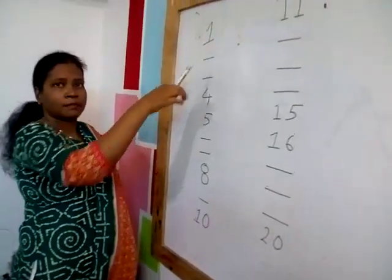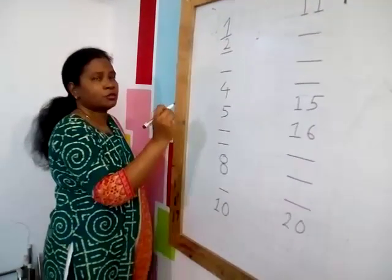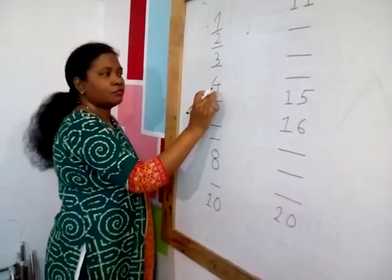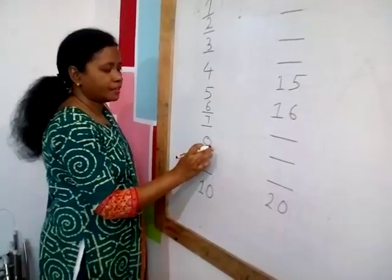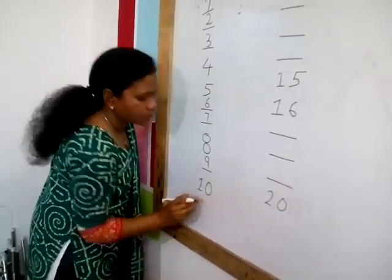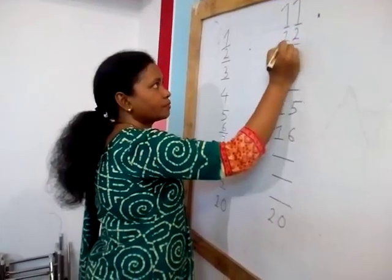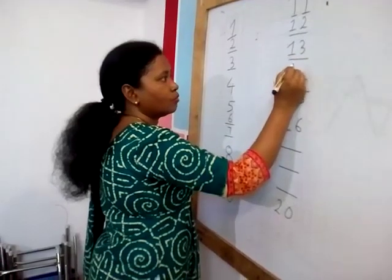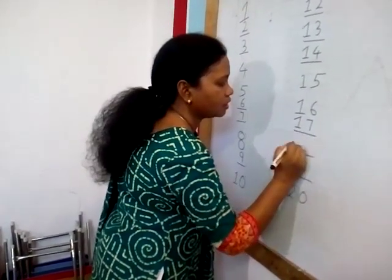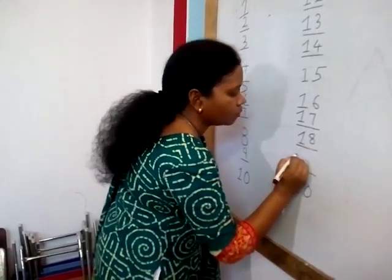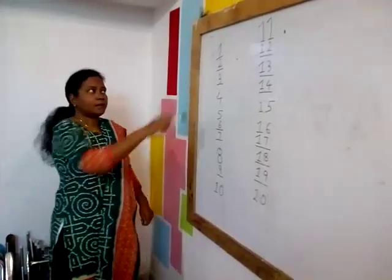So children, this is called missing number. One — after one, what number comes? Two. After two, three. After three, four. Then five. After five, six. Then seven. After seven, eight. Then nine. Then 1-0, ten. 1-1, eleven. 1-2, twelve. 1-3, thirteen. 1-4, fourteen. 1-5, fifteen. 1-6, sixteen. 1-7, seventeen. 1-8, eighteen. 1-9, nineteen. 2-0, twenty. So children, now it's clear — numbers one to twenty.